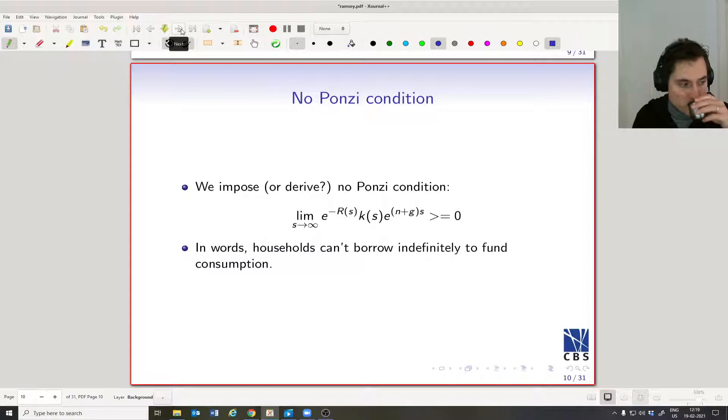Households can be very tricky. What they can do is have a very high level of consumption funded by borrowing, and then next period when they have to repay their debt, they can just borrow more to repay their debt and then borrow even more to fund a high level of consumption.